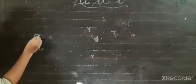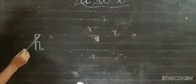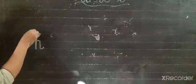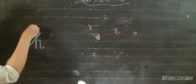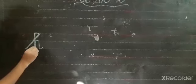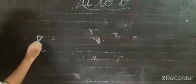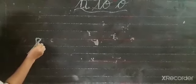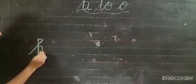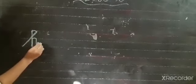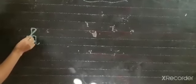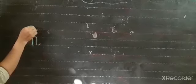Slanting line, do curve, then straight line. Then again go up. Again do small curve. Come down with a straight line and do small curve. Like this way.